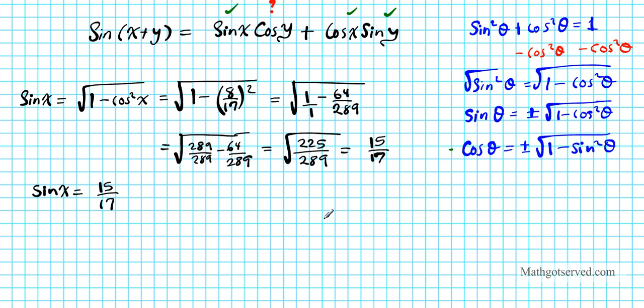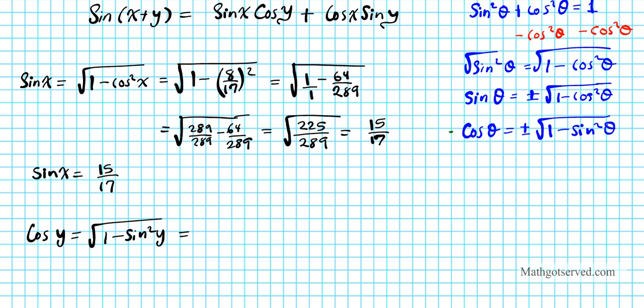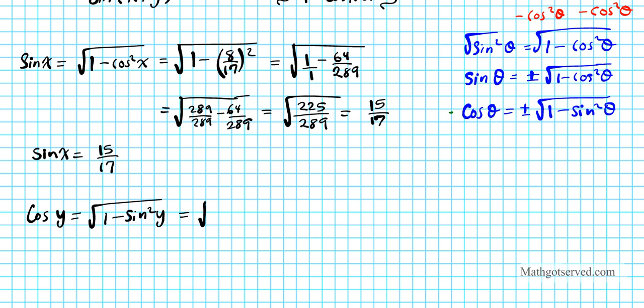So we know that cos y is going to be the square root of 1 - sin²y. That's this variation of the Pythagorean identity. Sin y as indicated in the problem is 4/5. So we're going to substitute that in here. So we're going to have the square root of 1 - (4/5)².